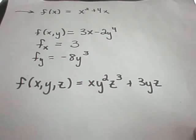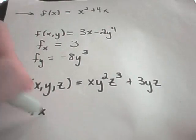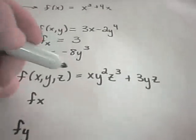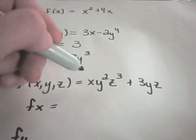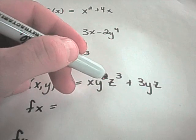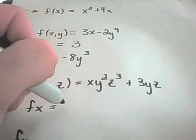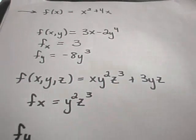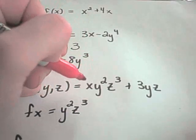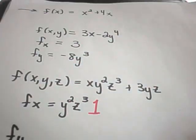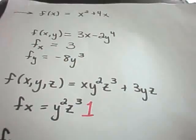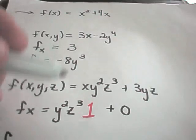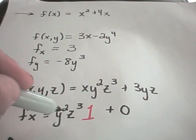Here we have three variables: x, y, and z. So we're going to calculate a partial derivative with respect to x, with respect to y, and with respect to z. If I do the partial derivative with respect to x first, that means y and z are just constants — constants basically just come along for the ride. So I'll have y squared and z cubed in there, and the derivative of x is simply times 1. There are no x terms in the other part, so 3 times y times z is just a constant, and the derivative of a constant is 0. The partial derivative with respect to x will simply be y squared times z cubed.